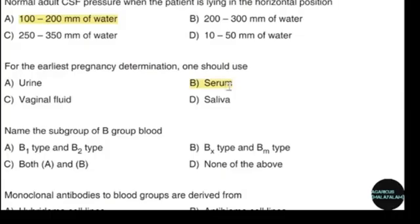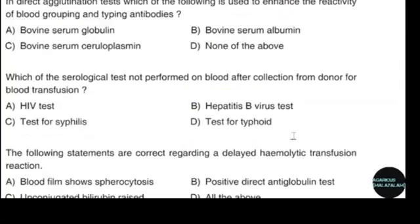Name the subgroups of blood group B. Correct answer: option B, Bx type and Bm type. In the direct agglutination test, which of the following is used to enhance the reactivity of blood grouping and typing antibodies? Correct answer: option B, bovine serum albumin. Which serological test is not performed on blood collected from a donor for blood transfusion? Correct answer: option D, test for typhoid.